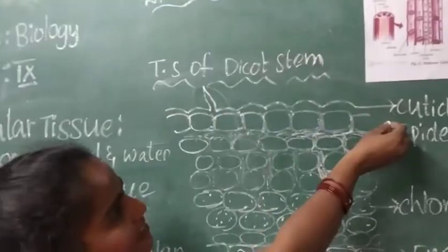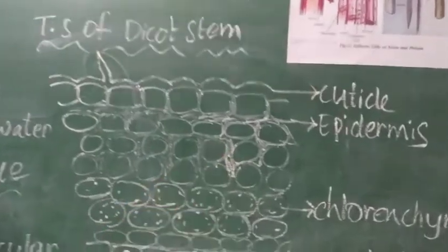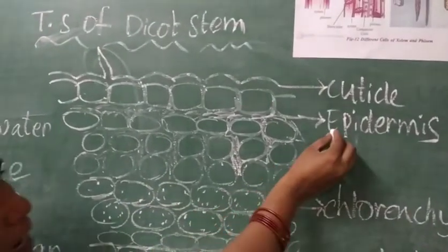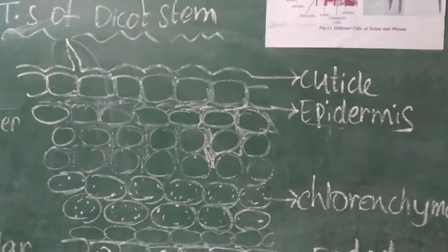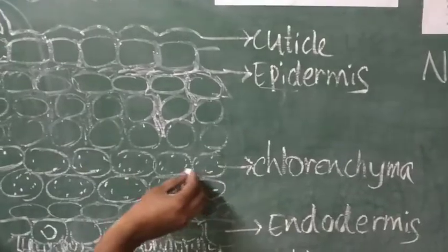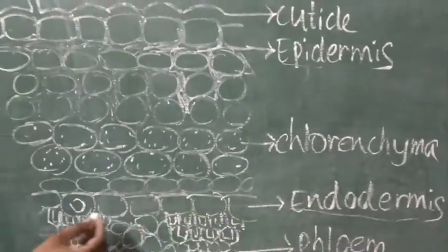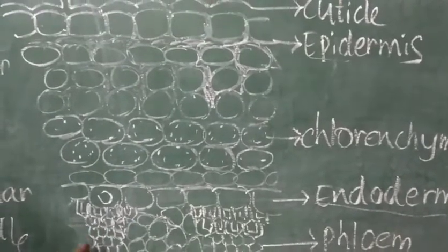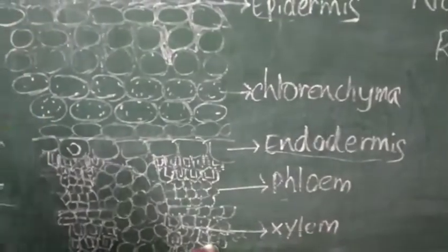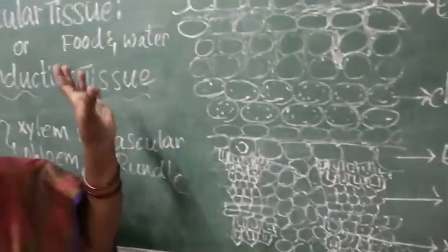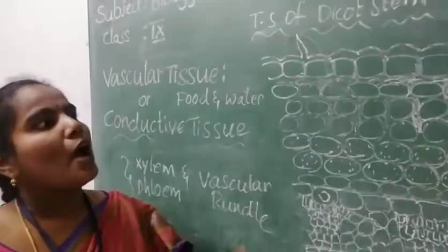In the dicot stem structure, the uppermost layer is the cuticle, which helps protect the inner parts of the plant. Below that is the epidermis, which is part of the dermal tissue. Then we have chlorenchyma, which is part of the ground tissue. Next is the endodermis, also part of the dermal tissue. And finally the xylem and phloem are visible. In each and every part of the plant, all four tissues are present.